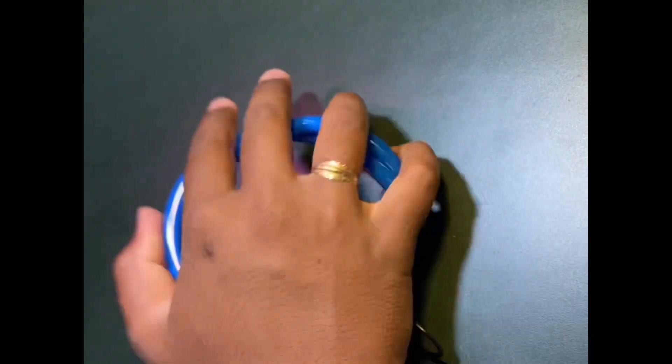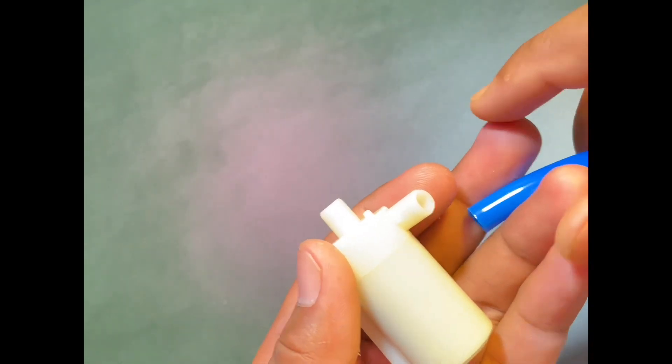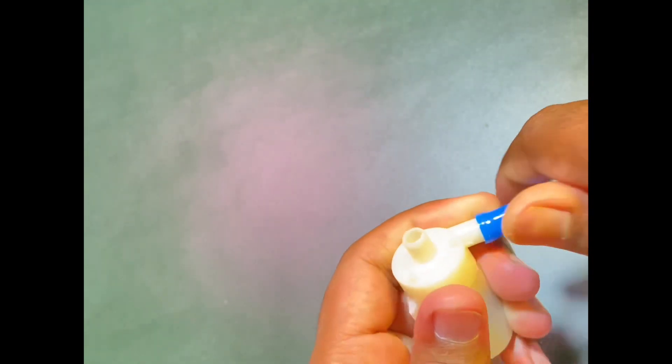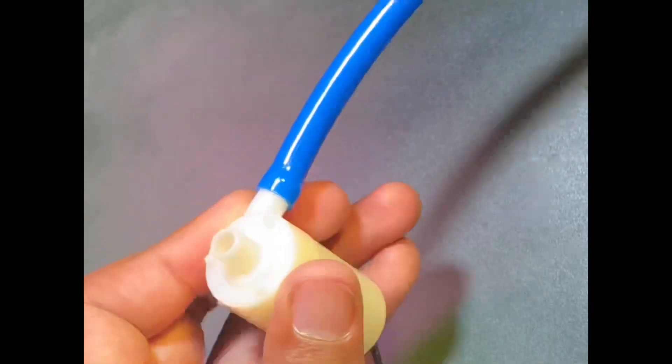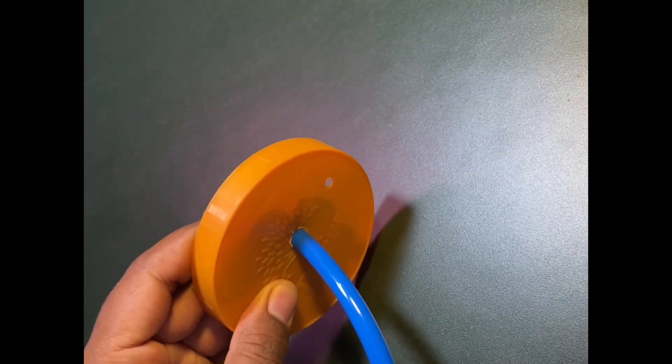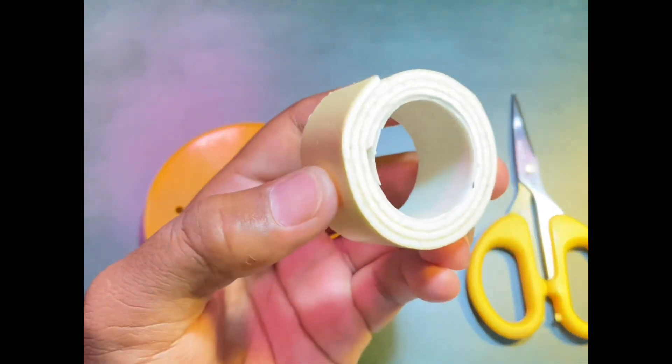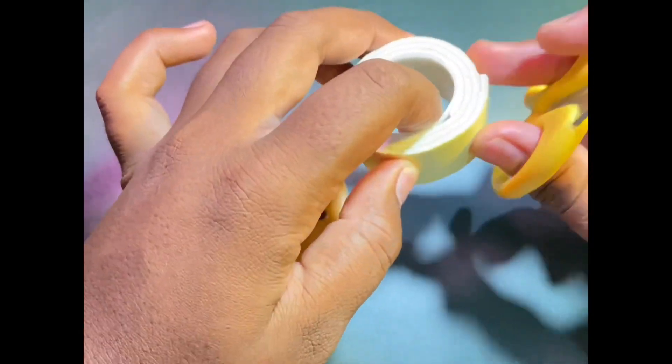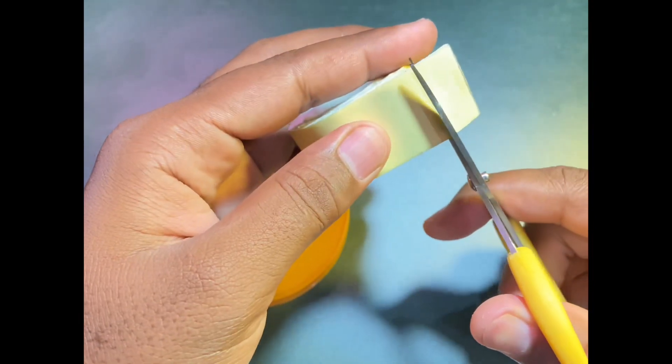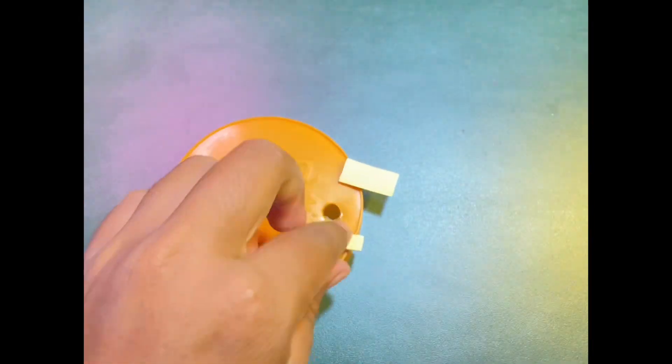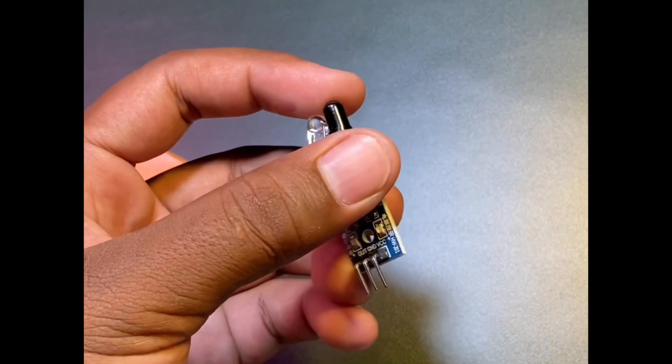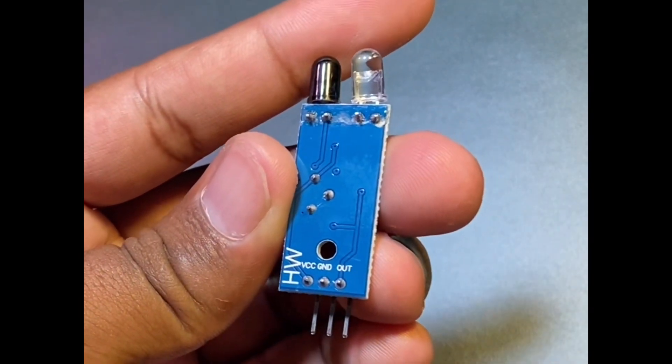You need a DC water pump and a plastic pipe. Also need a double-sided tap just to attach this proximity sensor and the transistor. This is the proximity sensor having three terminals: one is VCC, ground, and out.